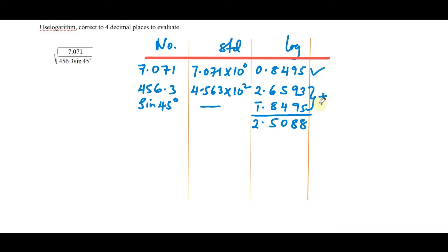Having done that, this is the log from the numerator and this is the log from the denominator. We are dividing, so we shall take 0.8495 from the numerator, then subtract 2.5088. When dividing, we subtract the logs; when multiplying, we add the logs.